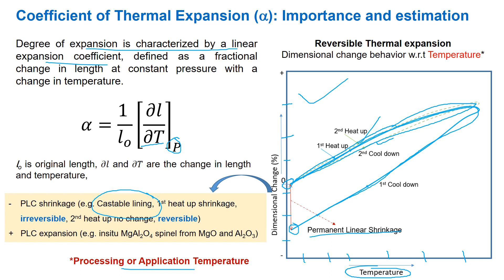In general, with declining bond strength, the asymmetry of the energy well increases and thus the thermal expansion of a solid varies inversely with its bond strength or melting point. The material may have positive PLC — that is expansion.